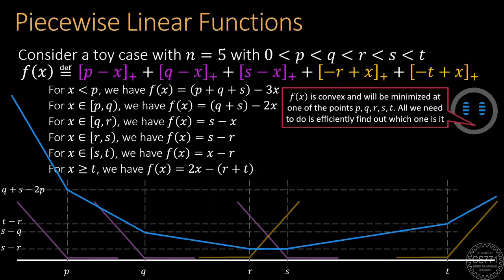From this example, we can also guess that this function will be minimized at one of the points p, q, r, s or t itself. It's just that we don't know which one.